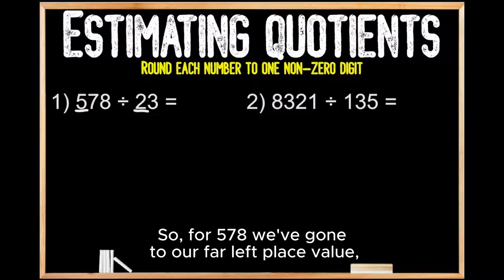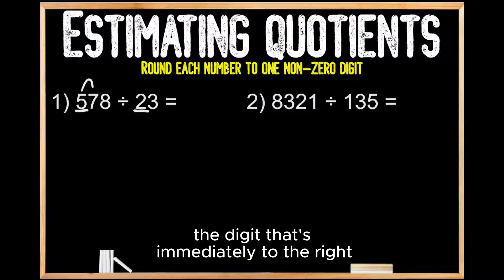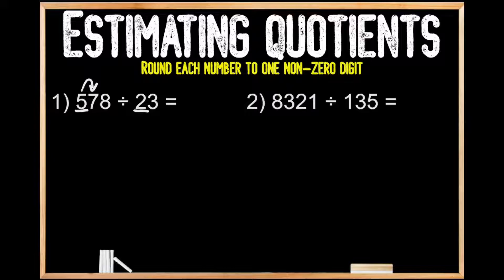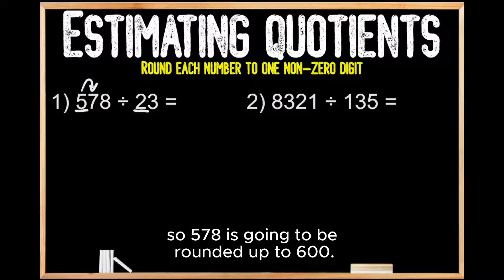So for 578, we've gone to our far left place value, and then we're going to look to the digit that's immediately to the right to see if we're rounding up or down. Since that digit in this case is a 7, we're going to be rounding up, so 578 is going to be rounded up to 600.